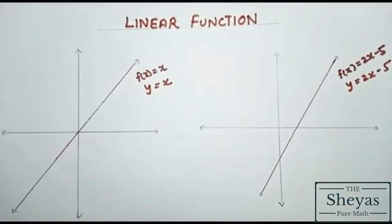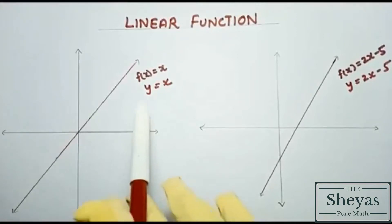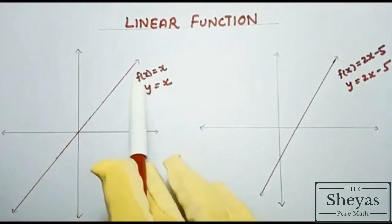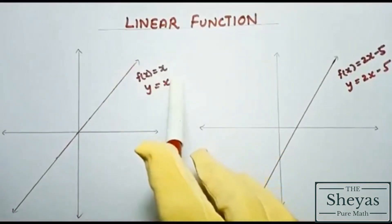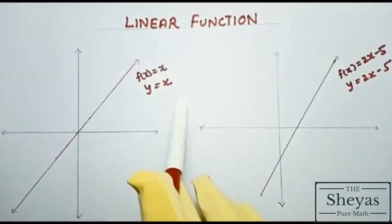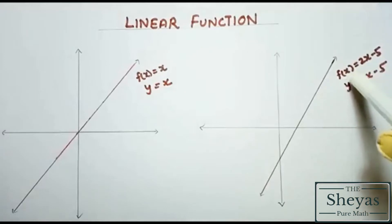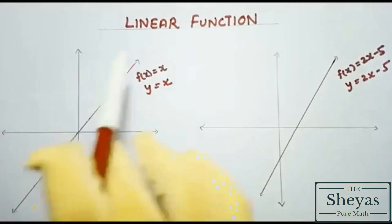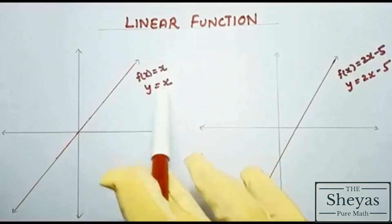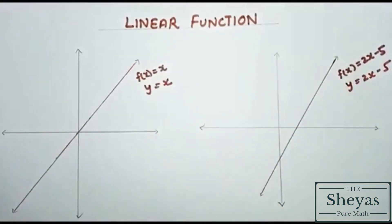Hi friends, let us discuss some of the functions and their graphs. This is the graph of f of x is equal to x, which can also be written as y is equal to x. And this is the graph of f of x is equal to 2x minus 5. These graphs I have drawn are not scaled — just example graphs.